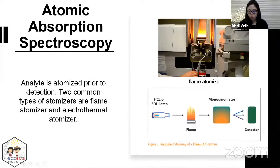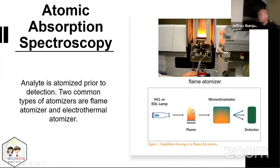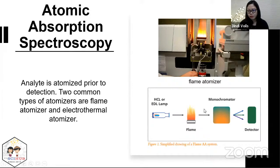This slide shows a picture of a flame atomizer, along with a simplified drawing of a flame AAS system. The flame converts your analyte into free atoms, and the free atoms interact with incoming UV-Vis radiation. The transmitted light is detected similarly to molecular UV-Vis — you have a monochromator and then a detector for signal processing.